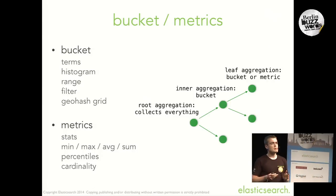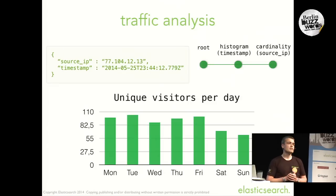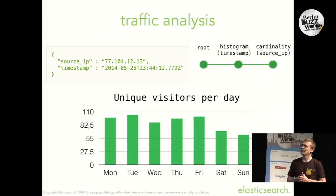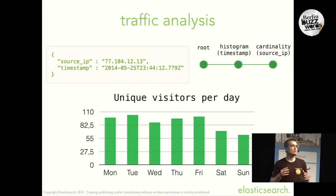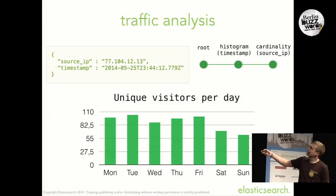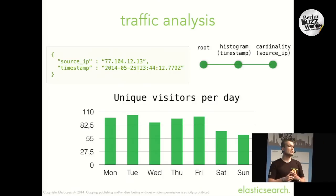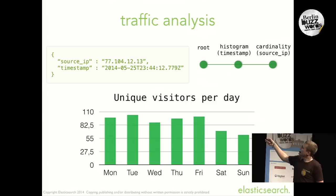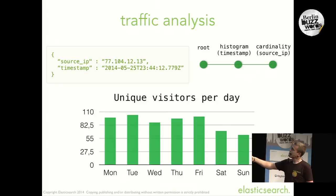This might still sound a bit abstract, so I'm going to give a few examples of things that you can do with aggregations that you couldn't do with Facets before because they lacked composability. Let's think about traffic analysis. If you are willing to build something like Google Analytics, you would have documents about your traffic with two fields: the source IP of the requests and the timestamp. You can run a cardinality aggregation on the source IP field under a histogram aggregation on the timestamp field in order to build a chart displaying the unique number of visitors per day.